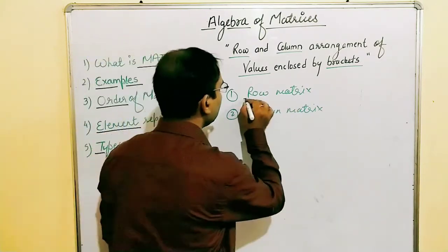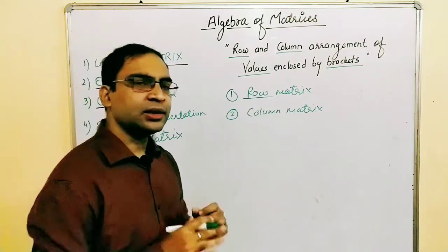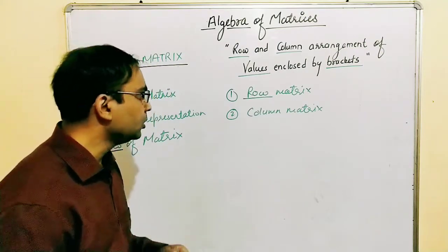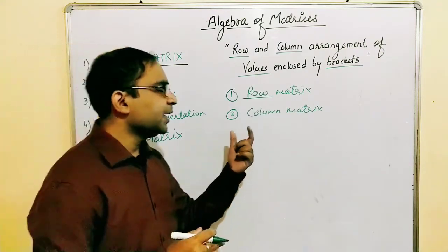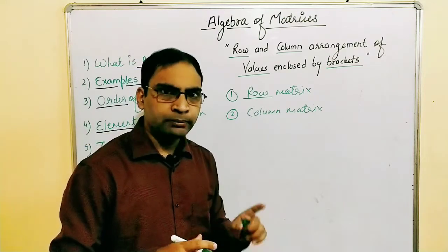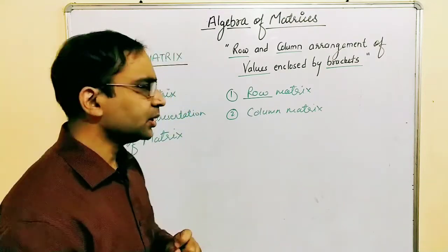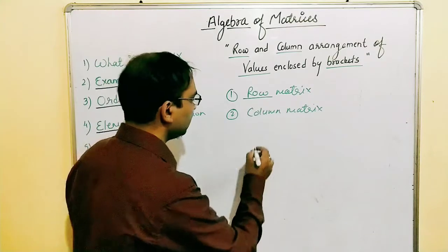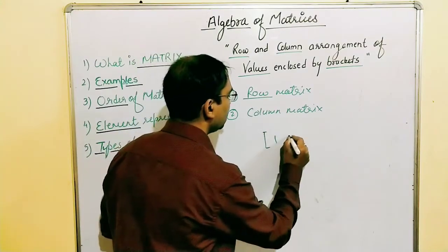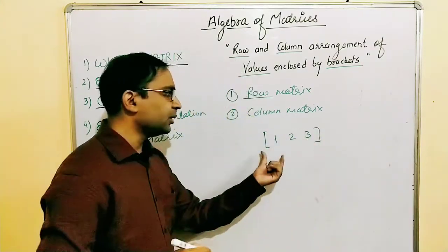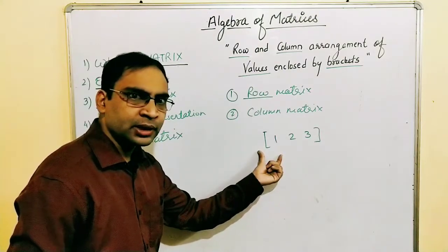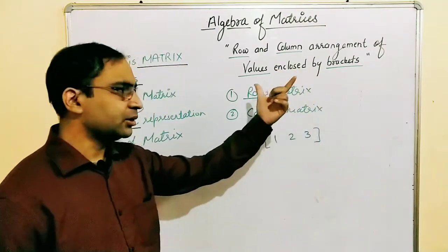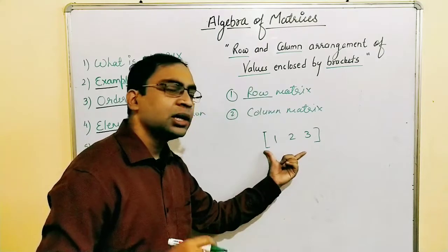It's very simple. From the name, we can see the row matrix is a matrix that contains a single row. That means if we have a single row — a row matrix — it can have any number of columns, but the matrix cannot have more than one row. For example, a matrix [1, 2, 3] has a single row, so this is a row matrix.